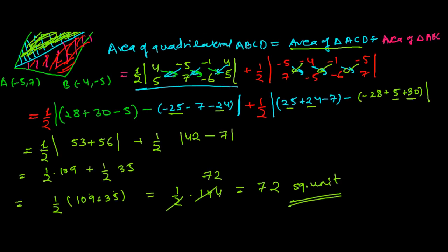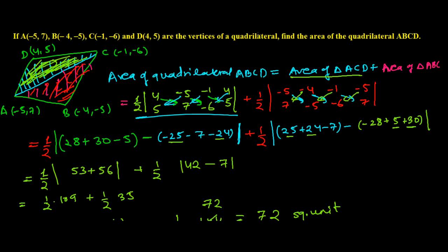So the area of the quadrilateral is 72 square units. Since it is area, the unit is square units. The concept is simple: we split the quadrilateral into two triangles, find the area of each triangle individually, and add them. This is how we find the area of a quadrilateral when all vertices are given.